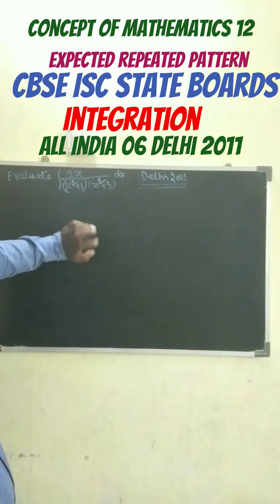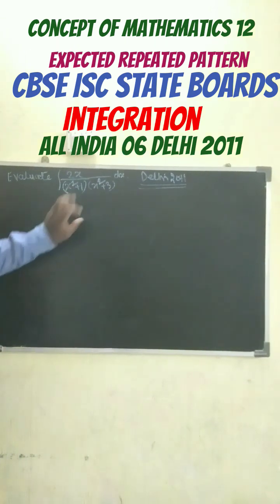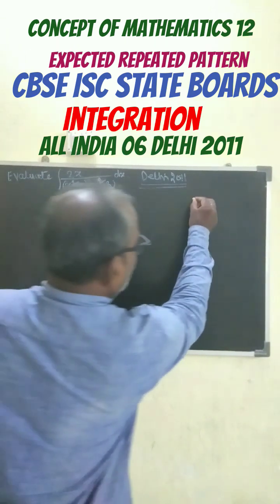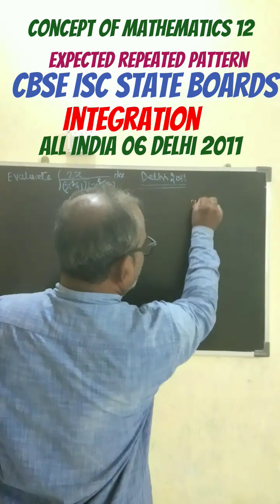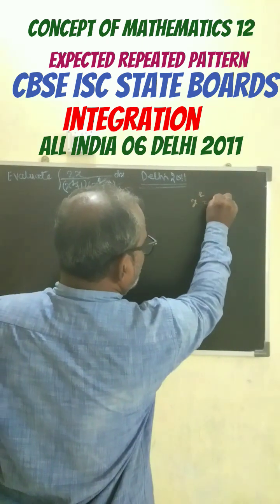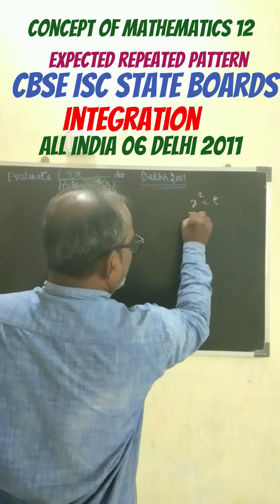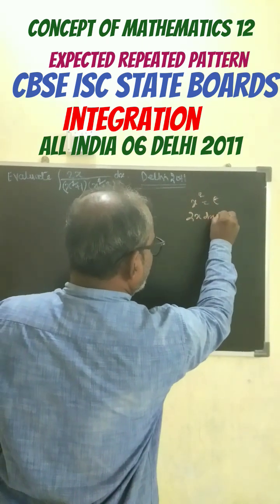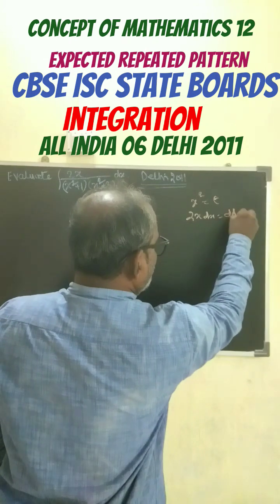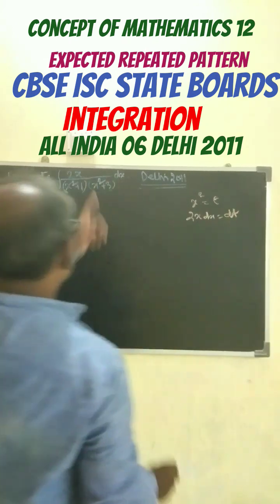Here it is given 2x and here we have x square. So we substitute here x square equals to t, then 2x dx equals to dt.